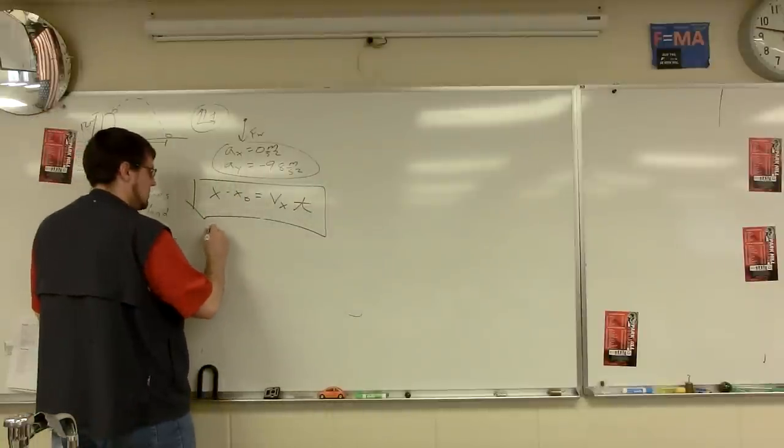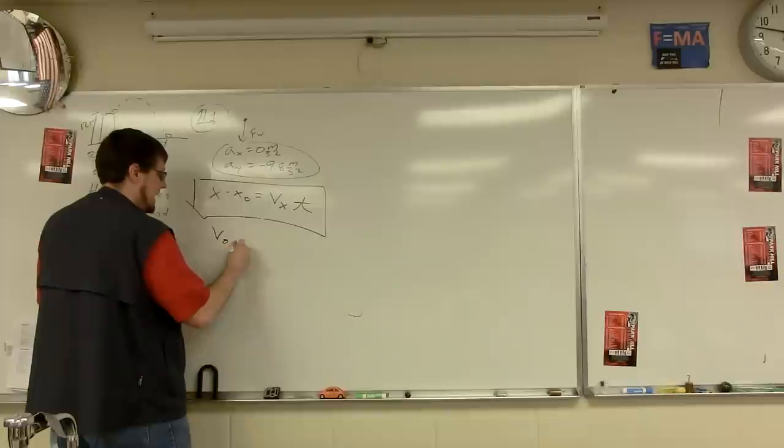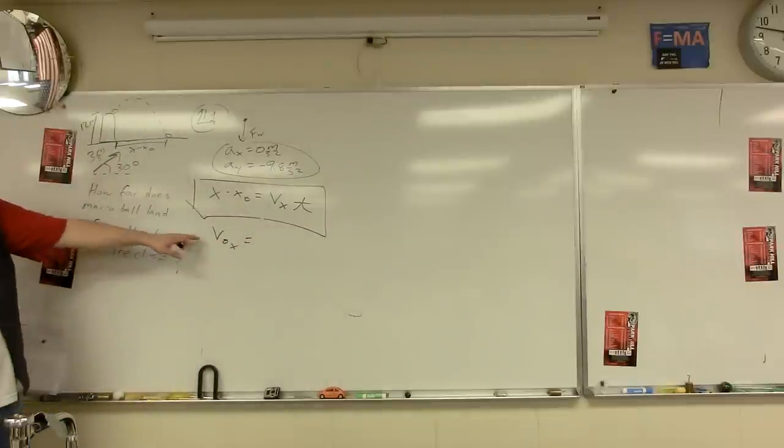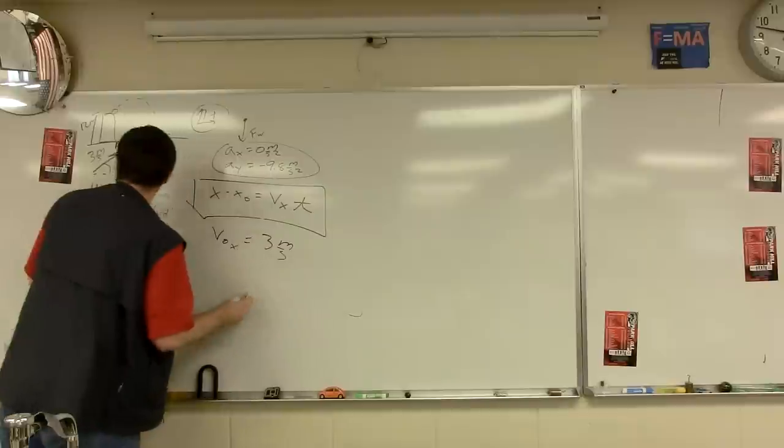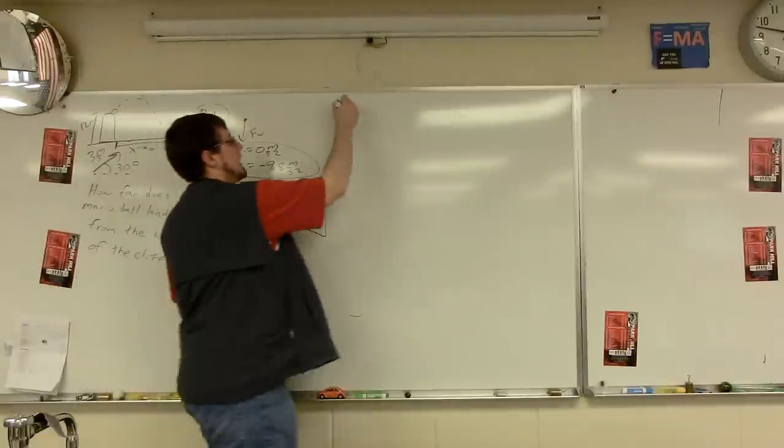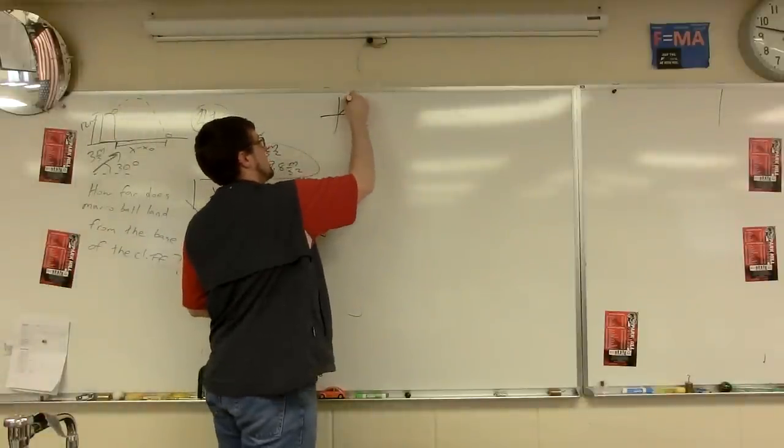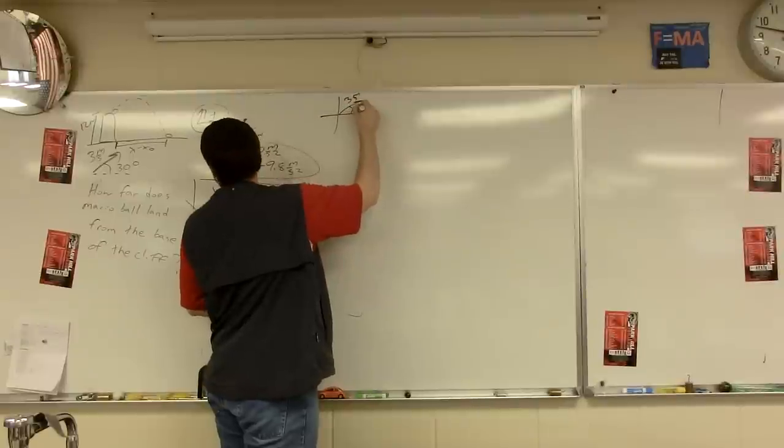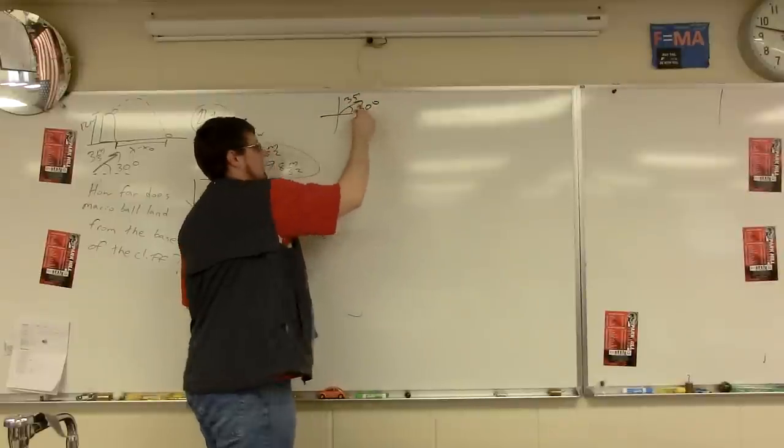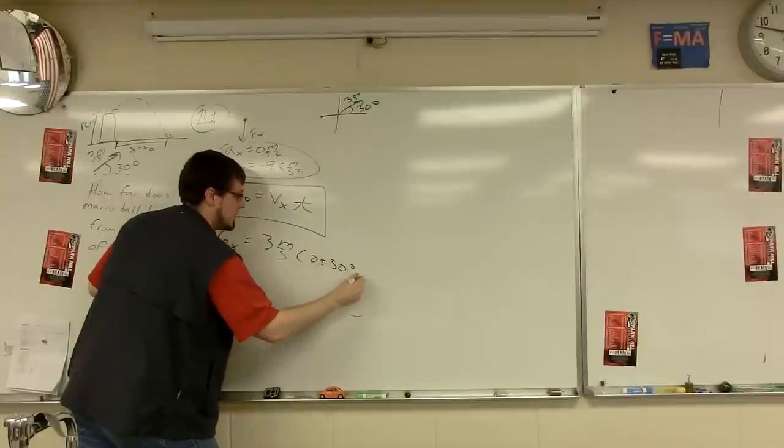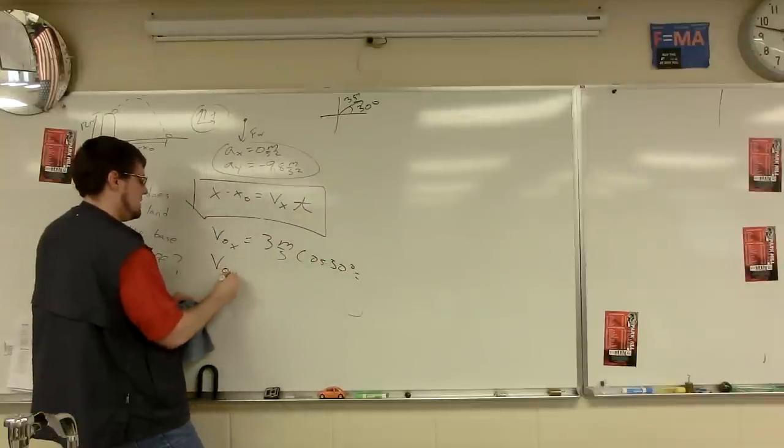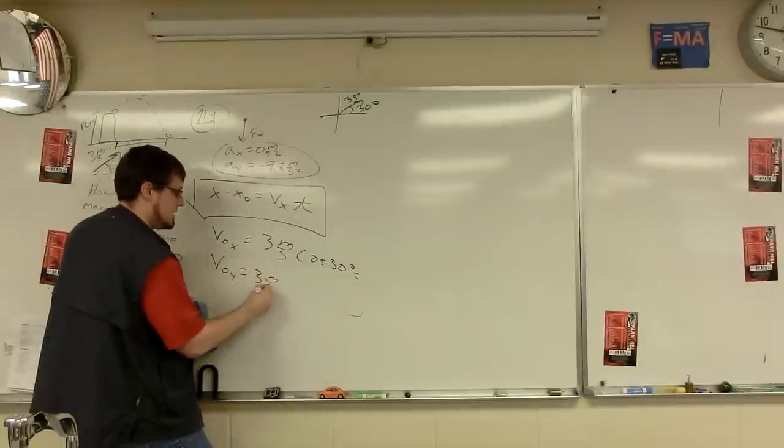But first, before we do all that, let's get our components. So, and I'll write V naught X for now, although you could call it VX. It will be 3 meters per second. Show some scratch work. Actually, I'll just show it right here. For automatic people, 3 meters per second. There's your angle from the X axis counterclockwise. So 3 cosine 30. Make sure you're in degree mode. Go ahead and get a number. I'll get one too.